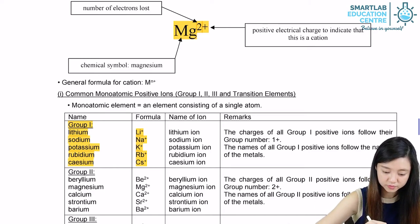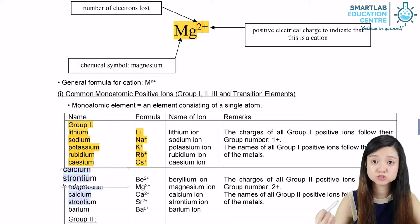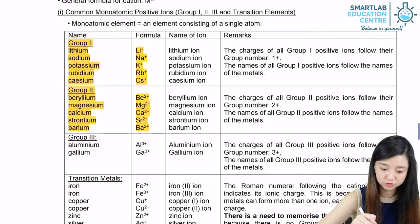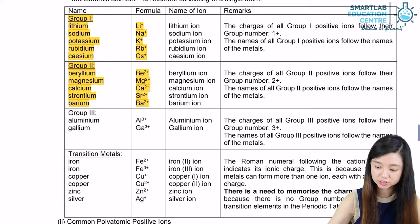For Group 2, they will all have a plus 2 charge because they will be losing 2 of the electrons in the outermost shell. The same goes for Group 3 with a 3 plus charge.